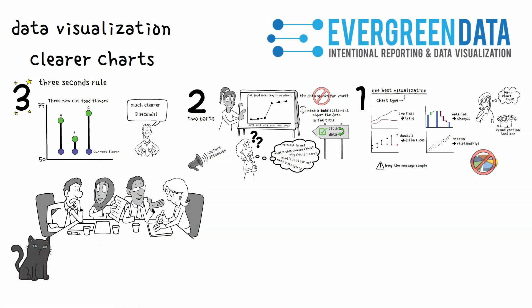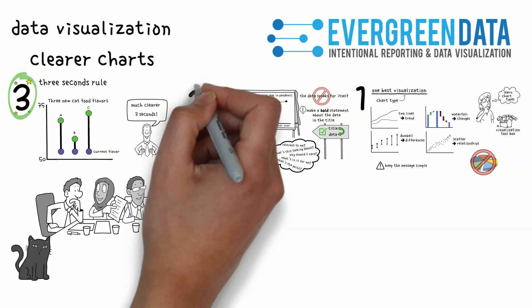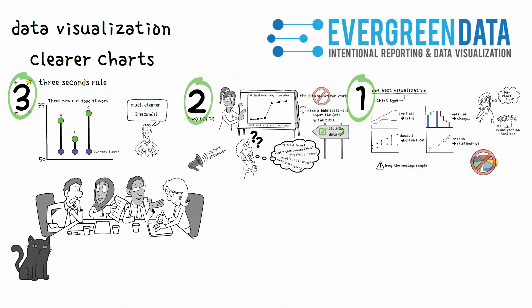Whether a colleague, a client, or a cat, use the three to one principle to make crystal clear graphs that your audience will love.